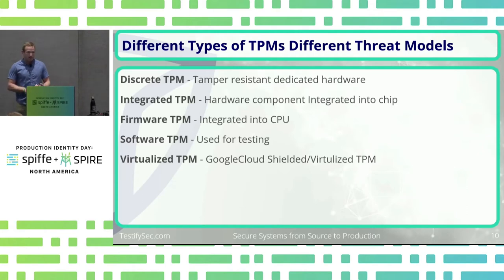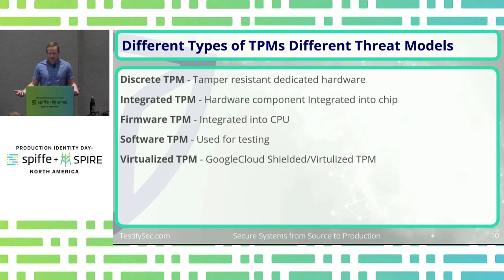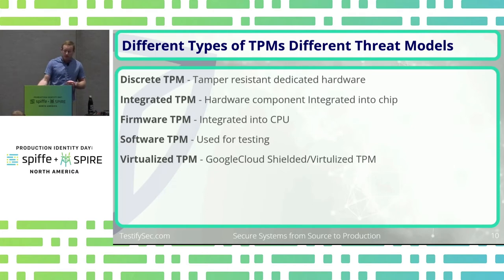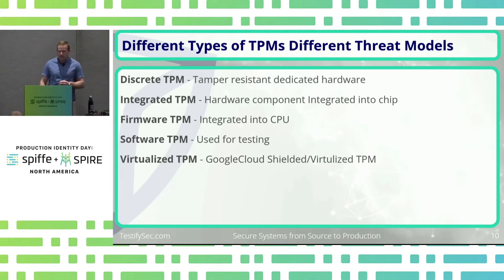You have a discrete TPM — this is what the Trusted Computing Group considers the most tamper-resistant. Most of the TPMs we're talking about are going to be integrated TPMs, a hardware component integrated onto the chip. There's a firmware TPM, which is actually integrated on the CPU; those might be vulnerable to management engine attacks, for example.